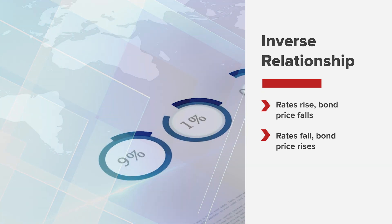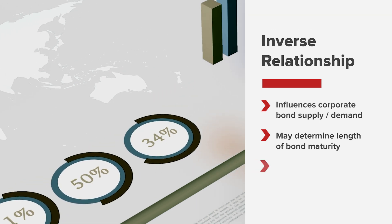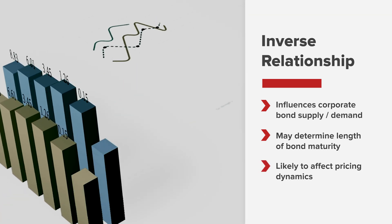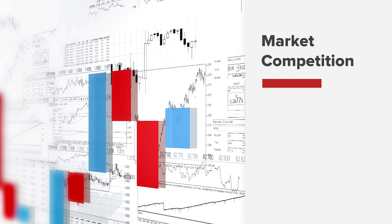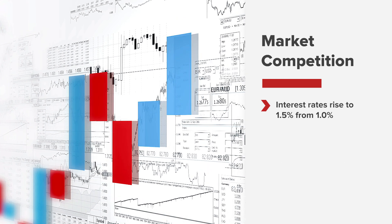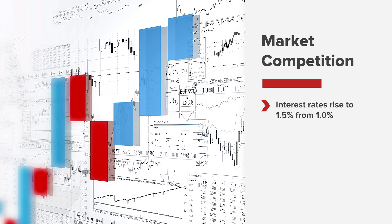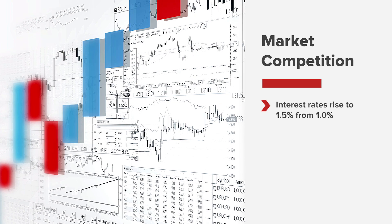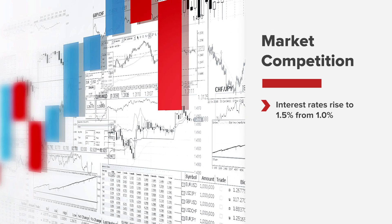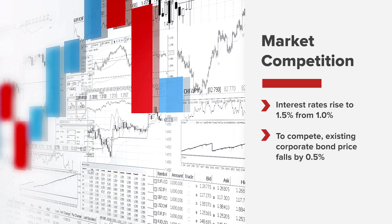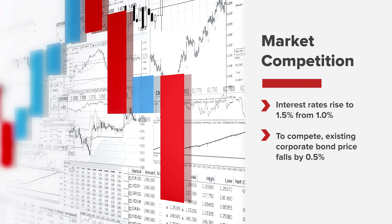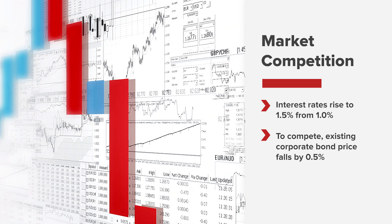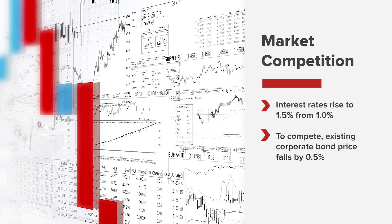This effect greatly influences the supply, demand, length of maturity, and pricing dynamics in the primary and secondary markets. If interest rates were to increase to 1.5% from 1%, a corporate bond that was purchased before the increase now appears to be a less attractive investment compared to the issuance priced at the higher rate. So to compete with the new issuance, the price on the existing bond — the one that was bought when rates were 1% — will most likely fall relative to the change in the market.